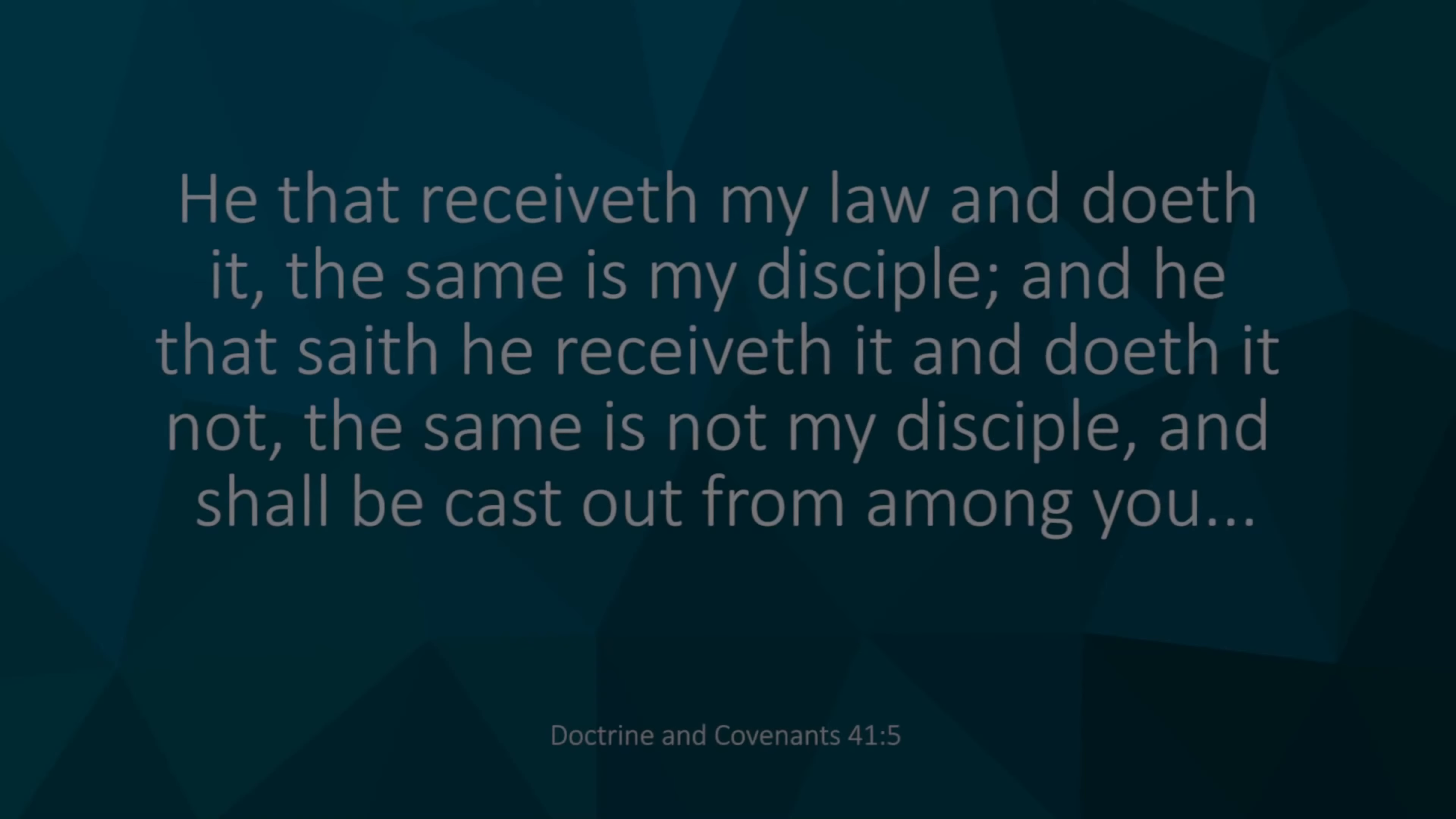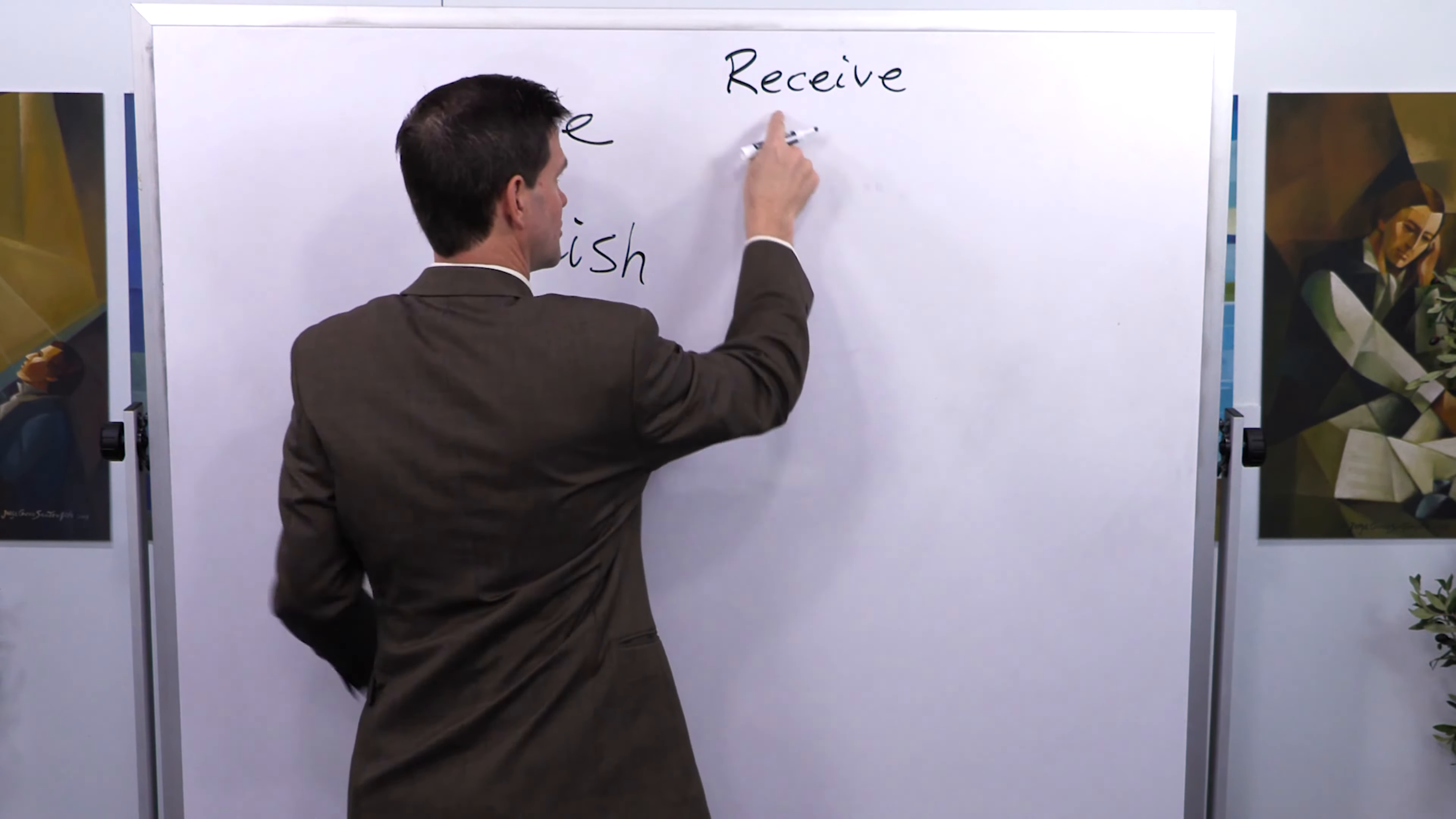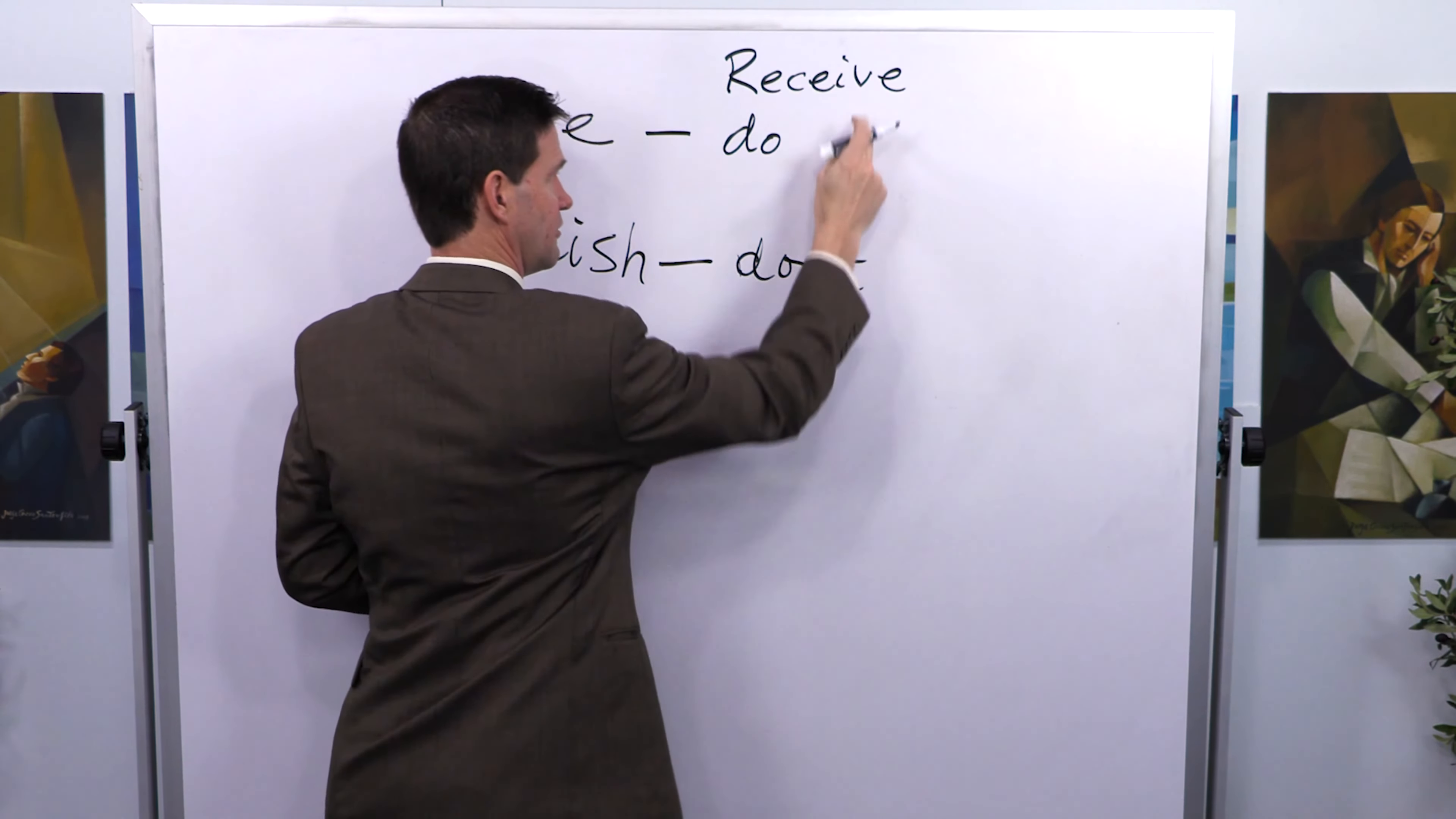Well, look at the contrast here. Verse 5: He that receiveth my law and doeth it the same is my disciple, and he that receiveth it and doeth it not the same is not my disciple, and shall be cast out from among you. It's pretty simple. This is not rocket science here. You'll notice that in both cases, both groups of people receive the law. Both of them know exactly what God wants them to do. The contrast, so that's the similarity. Now, the contrast is the wise actually do it. They strive to live it, to become that. The foolish reject it. They don't follow what they've received.